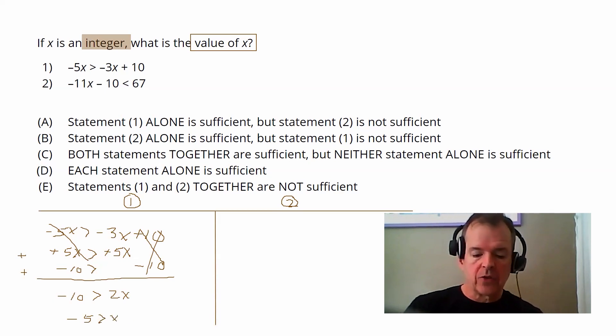So, and I can also write that the other way, if it's easier for me to process it that way, as I know that X is less than negative five. Well, remember they want a value, a single value.